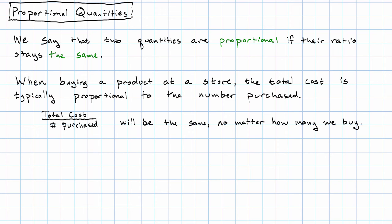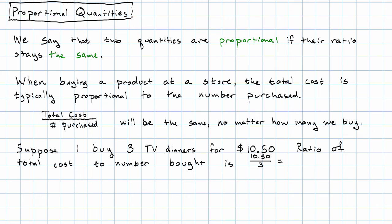Suppose I go to the store and I buy three TV dinners for $10.50. Then the ratio of cost to number bought is 10.50 over 3. Or simplifying that, I take 10.5 divided by 3. That's 3.5.